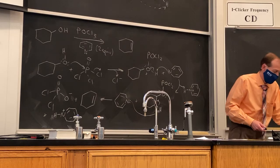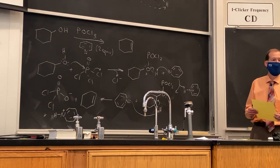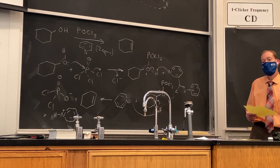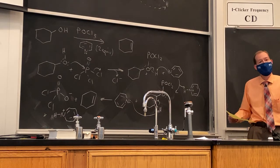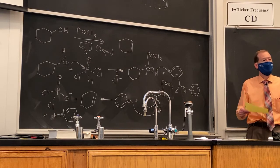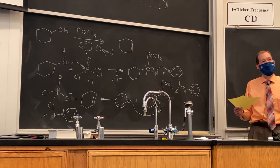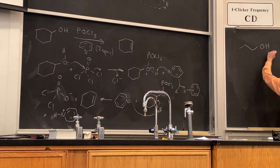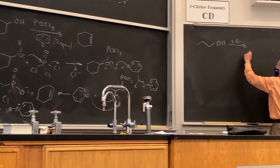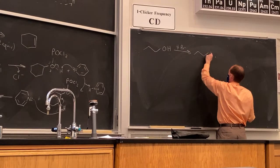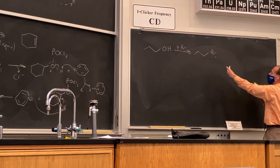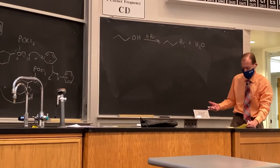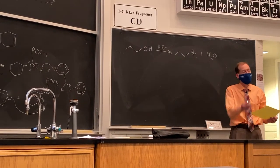What would happen if you reacted an alcohol with one of our HX acids — HBr, HI, or HCl — instead of sulfuric acid? We would see a substitution process, because with HX the conjugate bases are strong nucleophiles. Those conjugate bases will function as nucleophiles rather than bases, so we would see a substitution process instead of an elimination. For example, 1-propanol with HBr would give 1-bromopropane, with water as a byproduct.